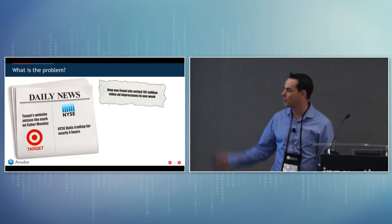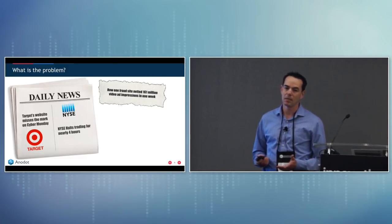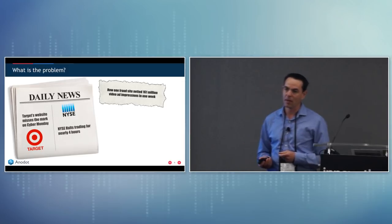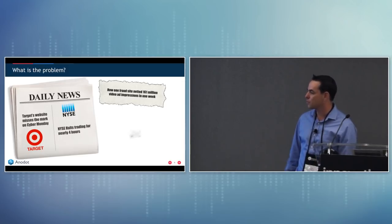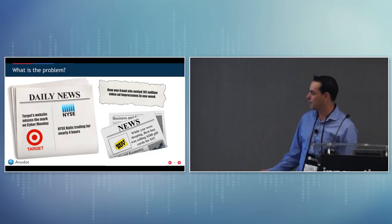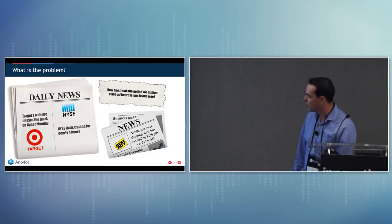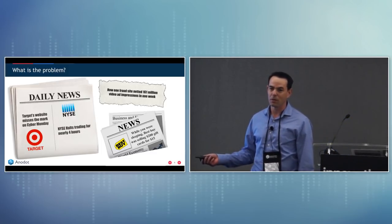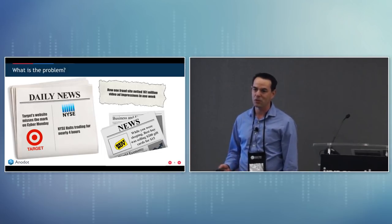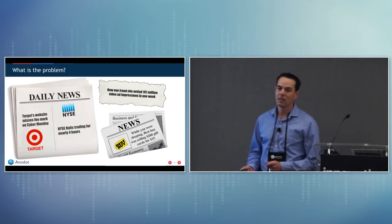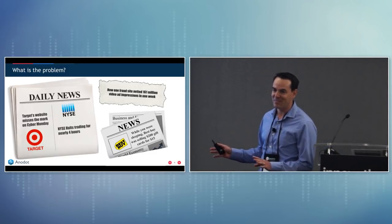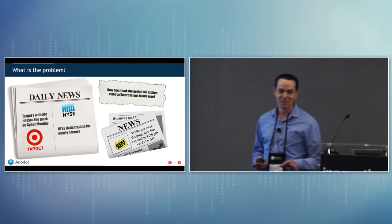Just two days ago there was a problem at Target where the company was disabling people from completing their purchases on Cyber Monday. The New York Stock Exchange halted trading for nearly four hours. And as we saw in the video, while you were sleeping, Best Buy was selling $200 gift cards for $15. When I searched for examples for this presentation, it was amazing to see how many problems happen every day from a computer glitch.